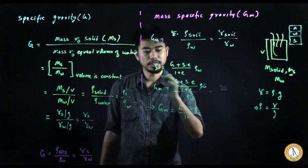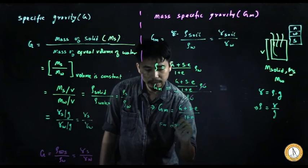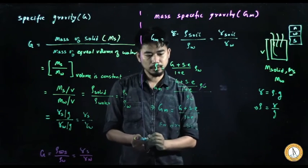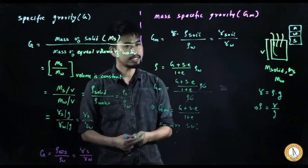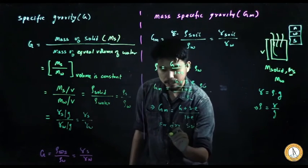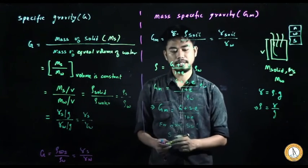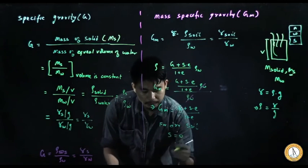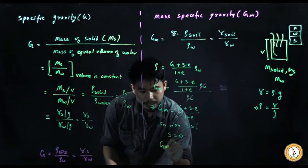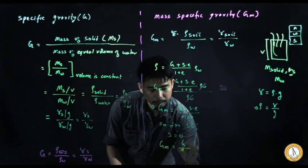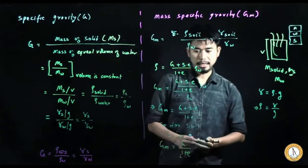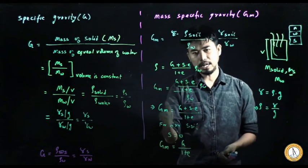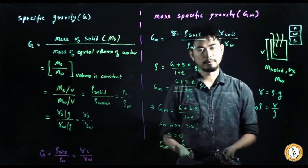For a special case — dry soil — the degree of saturation S equals zero. Substituting S = 0 into the relation gives Gm = G / (1 + e). If you know the concepts behind G and Gm, you can easily derive and apply this formula.